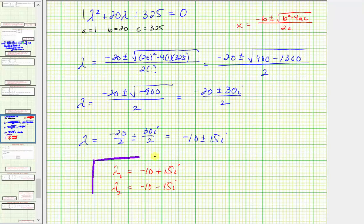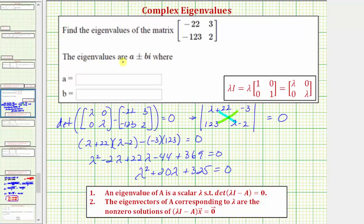But if we go back to the original question, I believe we're only supposed to enter a and b. We're told the eigenvalues are complex numbers, so in our case, a equals negative 10 and b equals 15. Notice how we don't enter the plus or minus or the i, we're only entering the value of a and the value of b.